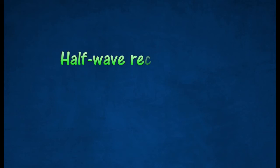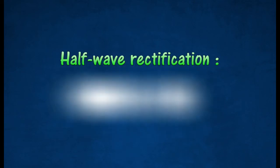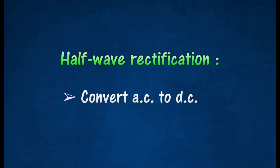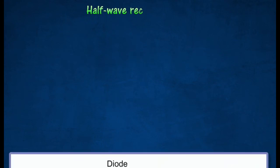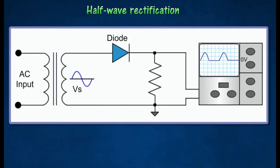Half-wave rectification is a process where only half of every cycle of an alternating current is made to flow in one direction only. The diagram shows a rectifier circuit used for half-wave rectification.